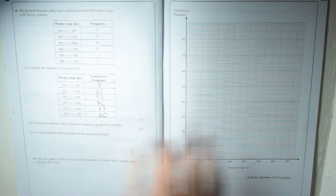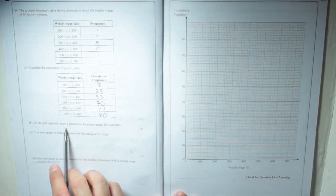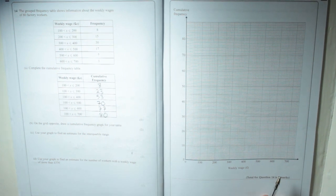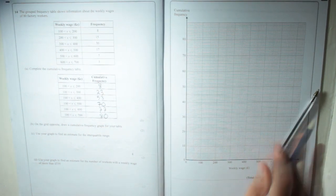Part B, on the grid opposite, so over here, draw a cumulative frequency graph for your table. So the way we plot that, obviously we're going to use a pencil to do that.